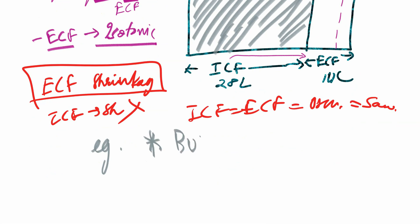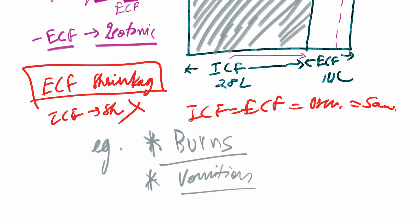Examples of isotonic dehydration: the primary and most important example is burns — isotonic dehydration is always seen clinically in people with burns. The second example is vomiting due to upper GI obstruction. Vomiting can cause various other types of dehydration also, but primarily it causes isotonic dehydration. Burns and vomiting due to GI obstruction cause isotonic dehydration.